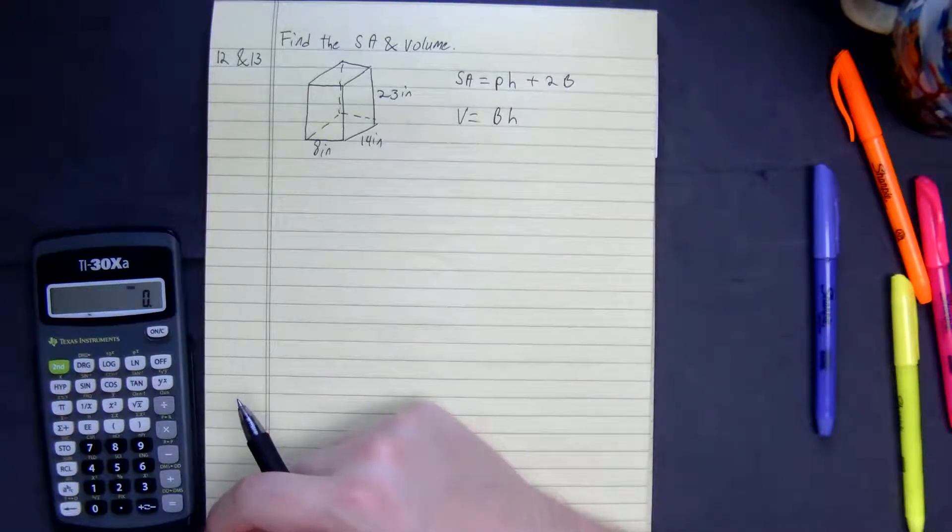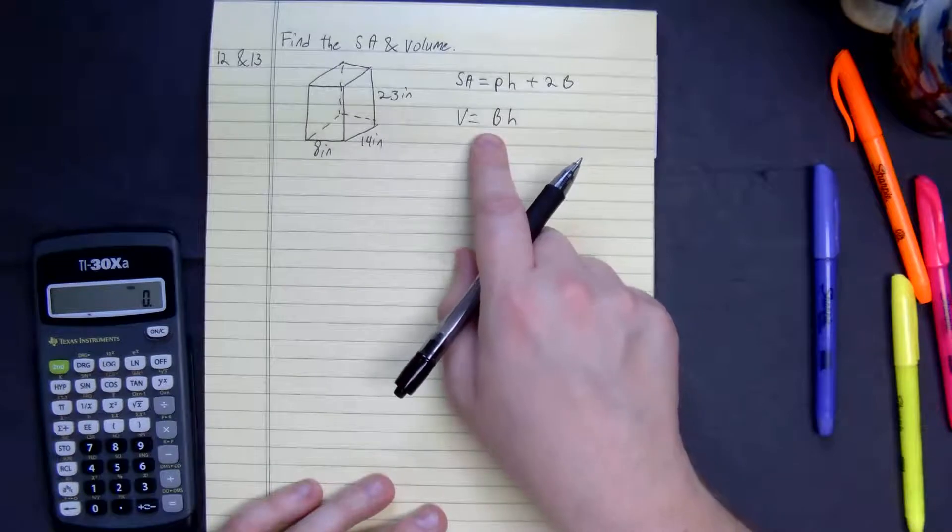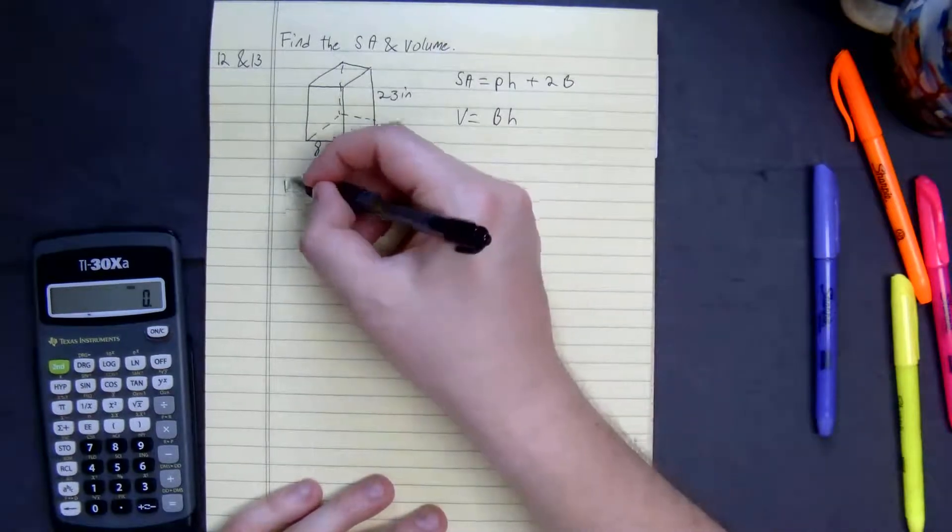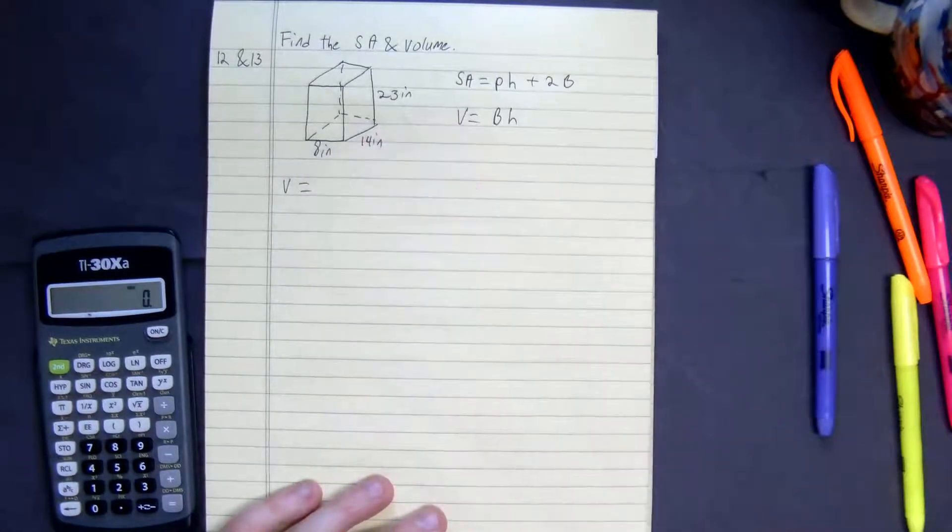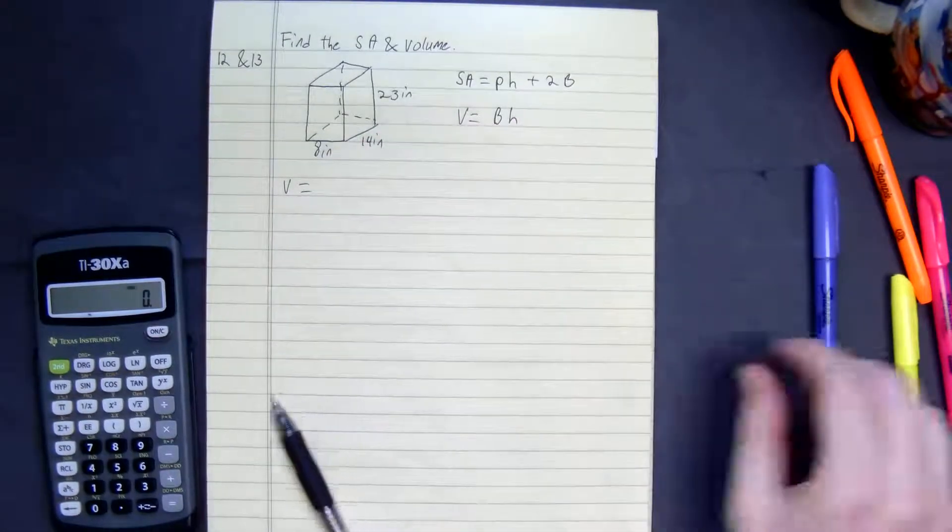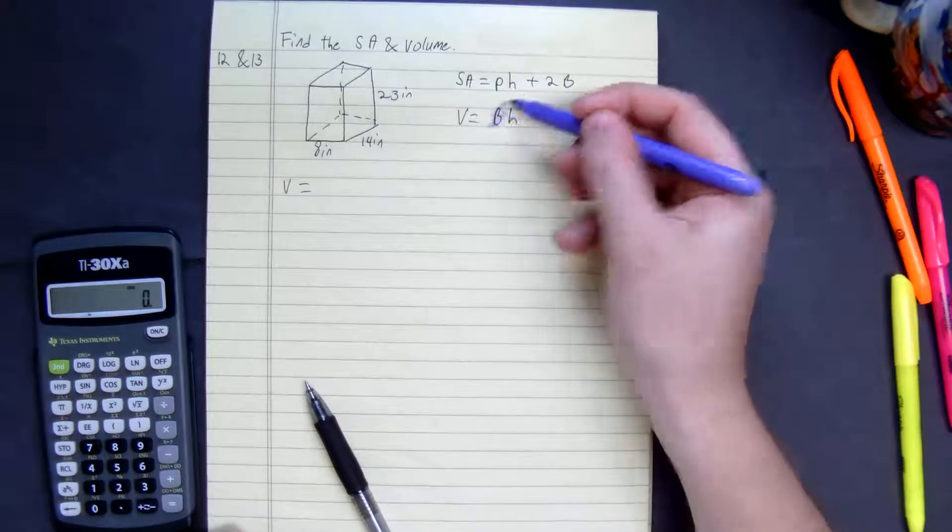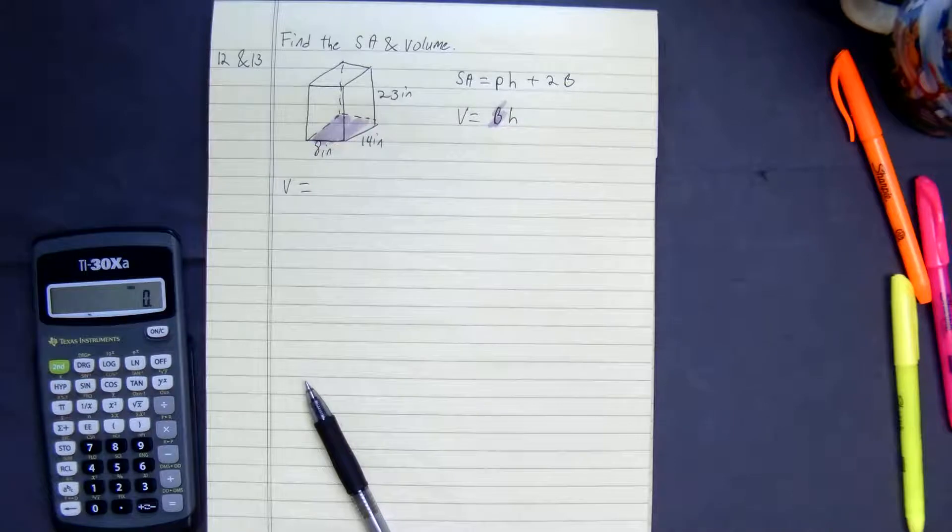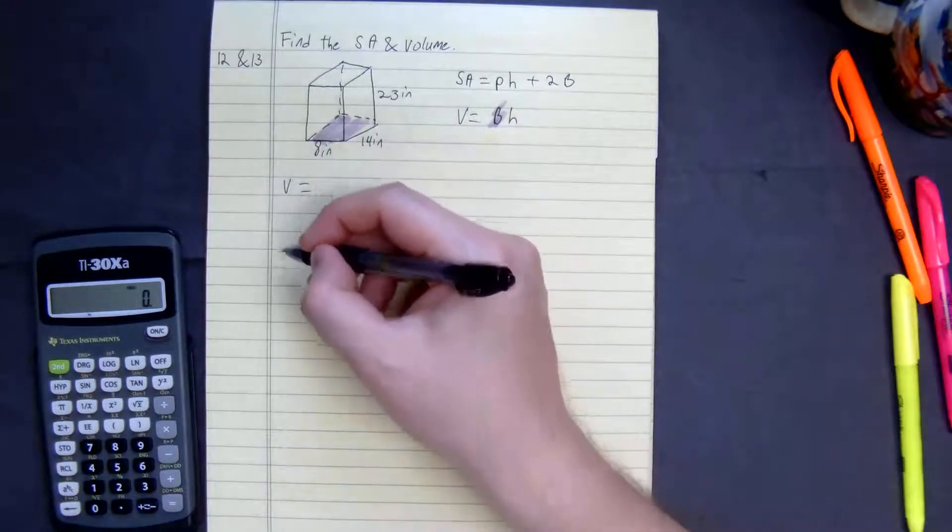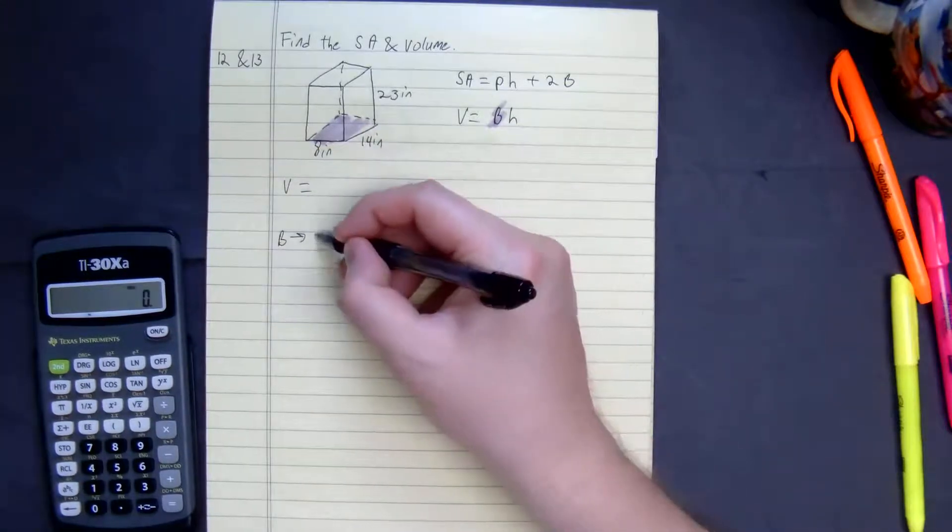Let's start with volume first. Volume, in my opinion, is always easier. So volume is equal to the base, the base here. Let me show you, that's our base. That right there, our base, is a rectangle.